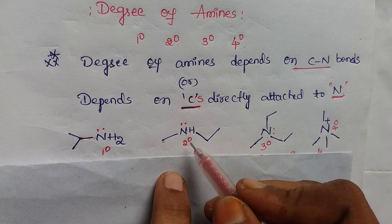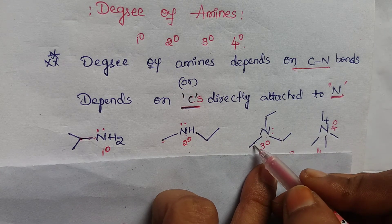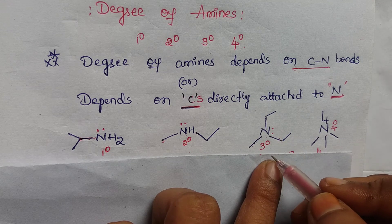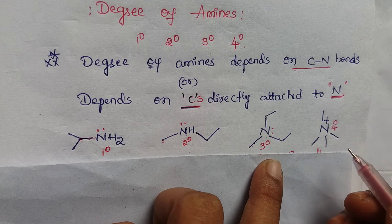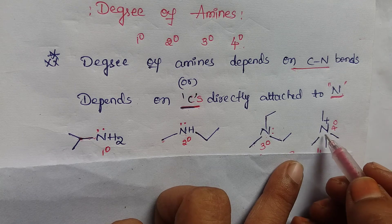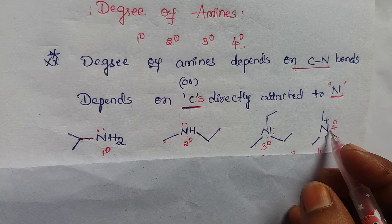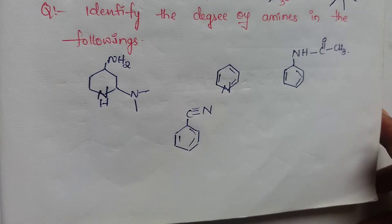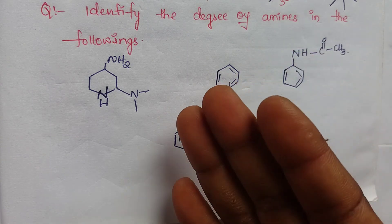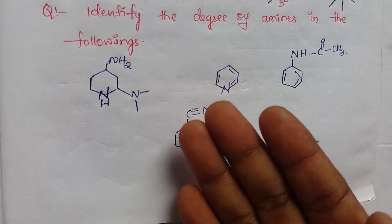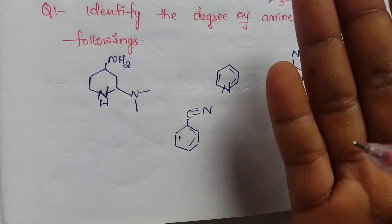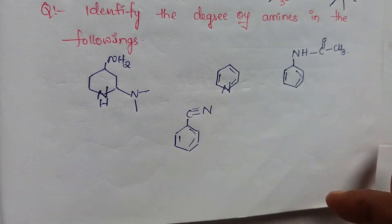If three carbons are directly attached to the nitrogen, it is called a tertiary amine. If four carbons are directly attached to the nitrogen, it is called a quaternary amine. I hope you understood this concept. Please solve the following problems using any one of those two concepts.